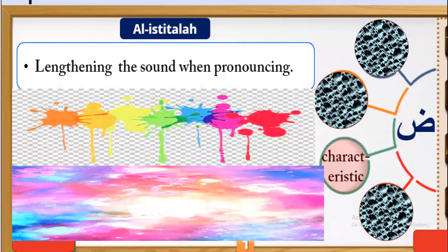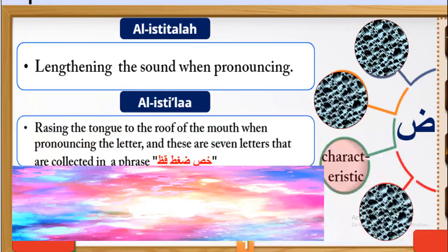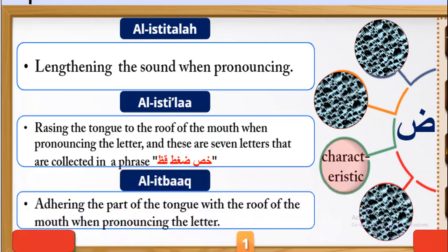The characteristics of Dad — number one: al-Istitala, meaning lengthening. The sound is pronounced 'Dod, Dod.' Number two: al-Istila, meaning raising the tongue to the roof of the mouth while pronouncing the letter. These are among the seven letters collected in a special phrase. Adhering part of the tongue with the roof of the mouth while pronouncing the letter.